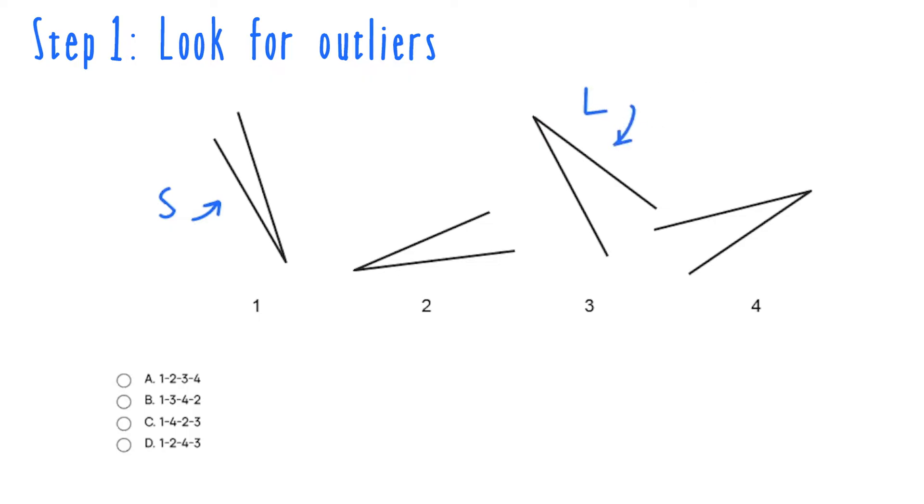Determining that angle 1 is the smallest doesn't actually help me eliminate any of the answer choices because they all list angle 1 as the smallest angle. However, only two of the answer choices list angle 3 as the largest angle. Therefore I can eliminate answers A and B. And that already gives me a 50-50 chance of getting this problem correct before I've even analyzed the remaining two angles.